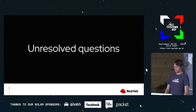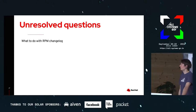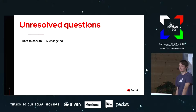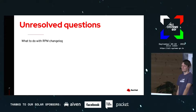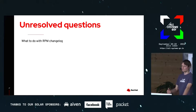There are still some unresolved questions. For example, what to do with the RPM changelog — everybody has a different opinion, so there's no general way to generate it that makes everyone happy. I'm personally happy with one line saying there's an update to the newest upstream version, but some maintainers want a list of new features, so this is something very difficult to do in general.